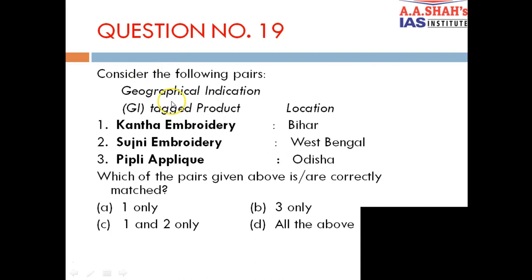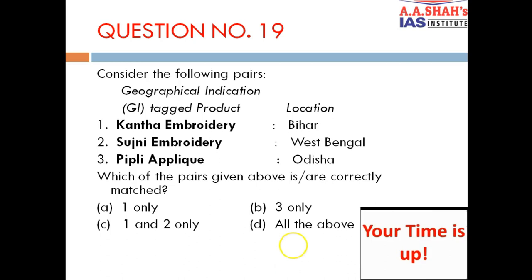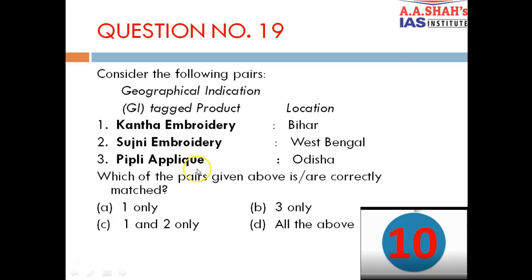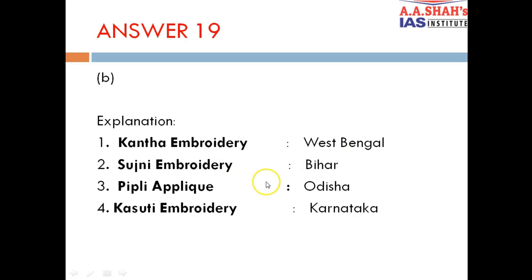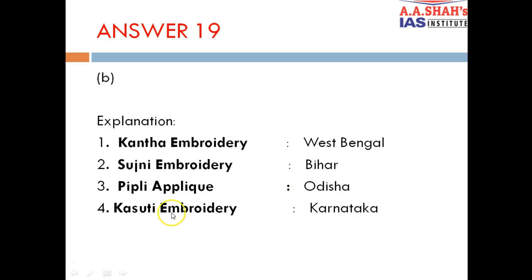Question 19: Consider the following pairs — GI tagged product and location. 1. Kantha Embroidery, Bihar. 2. Sujni Embroidery, West Bengal. 3. Pipli Appliqué, Orissa. The correct answer is B — third only is correctly matched. Pipli Appliqué is from Orissa — correct. Kantha Embroidery is from West Bengal, and Sujni Embroidery is from Bihar — both have been swapped in the question. There is also another form called Kasuti Embroidery from Karnataka.